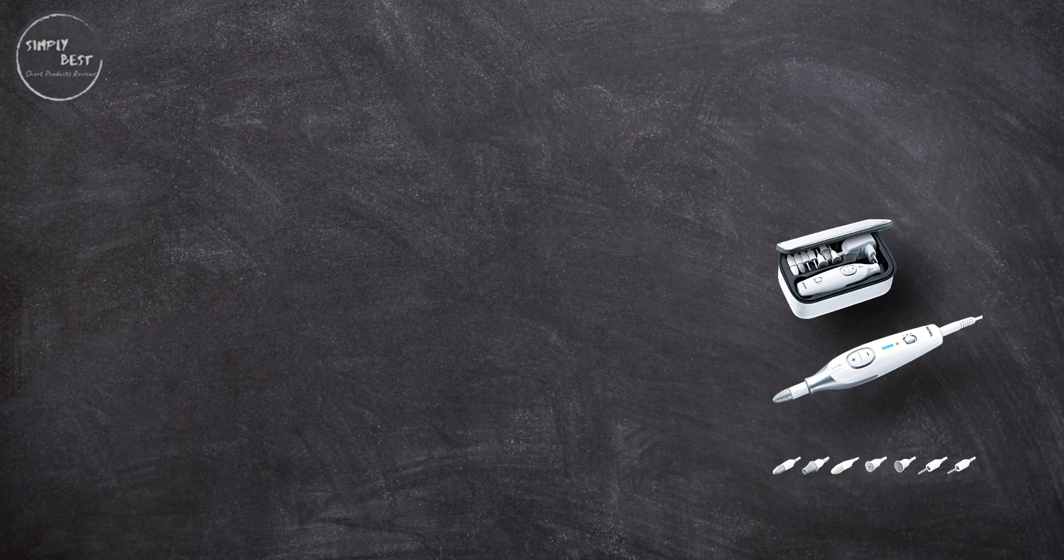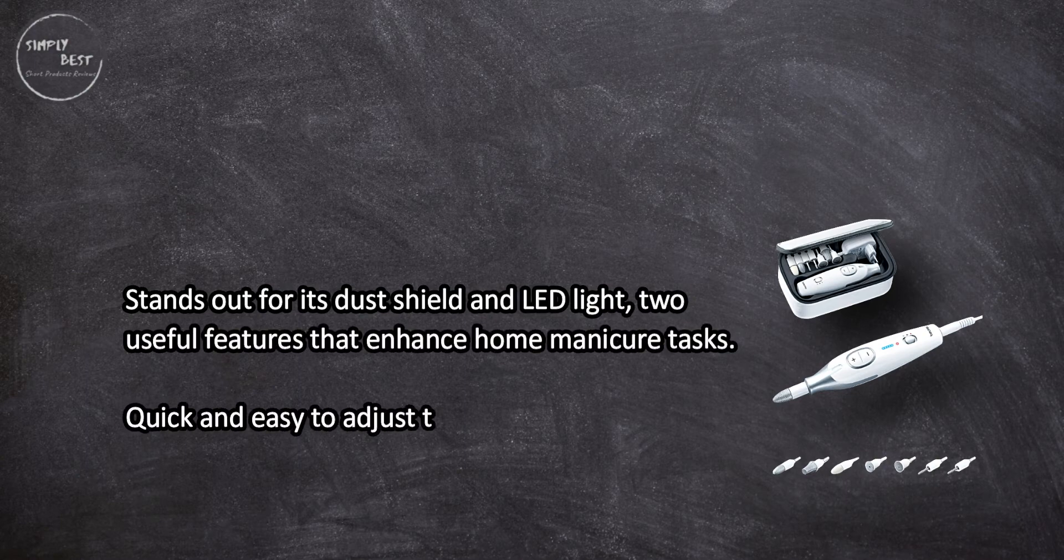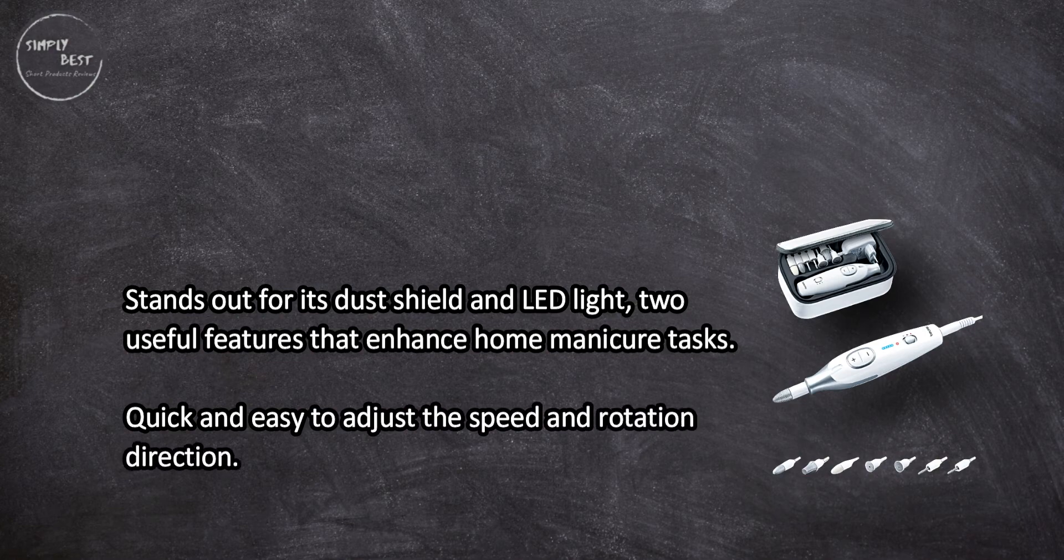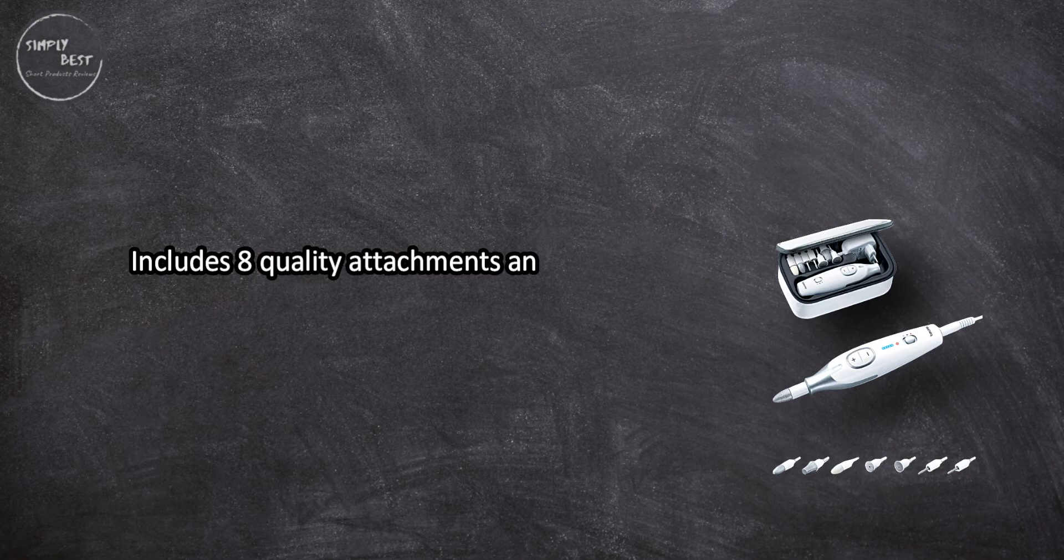At number two, Boira Electric Manicure and Pedicure Kit. This stands out for its dust shield and LED light, two useful features that enhance home manicures. It's quick and easy to adjust the speed and rotation direction, and includes eight quality attachments and a storage case.